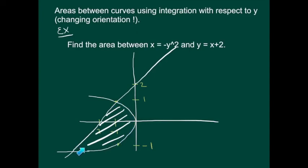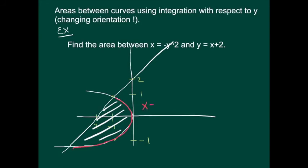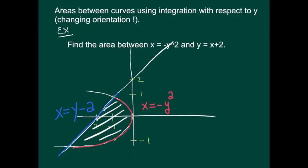Instead, let's tilt our heads to the right and look at the parabola as the top function and the line as the bottom function from this new perspective. From this viewpoint, the top function is x equals negative y squared, and we're plugging in y values to get x values out. It's essential to have x as a function of y. The bottom function, rearranged, gives x equals y minus 2. This change in perspective means the y-axis is now the input and the x-axis is the output.